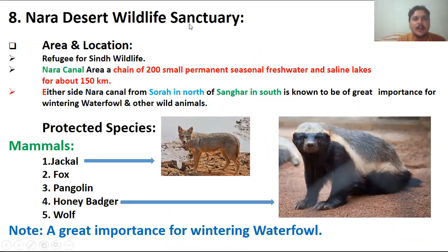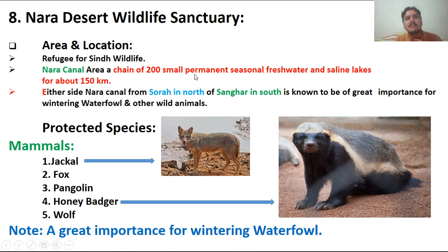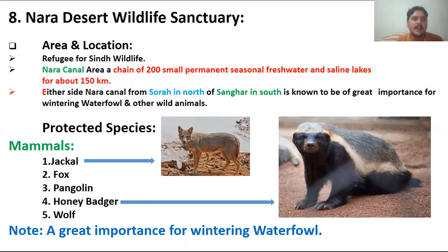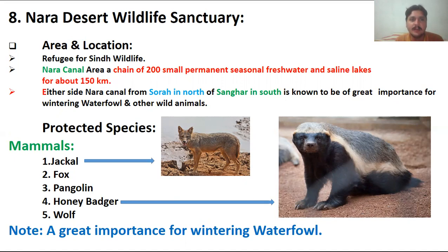Number eight is the Nara Desert Wildlife Sanctuary, located in the Sindh region. It is a very big refuge, serving as a supportive area for many wild animals. The Nara canal has about 200 small permanent and seasonal freshwater and saline lakes, forming a proper chain of water flow over a 150 kilometer area. It extends either side of the Nara canal from Sura in the north to Sangar in the south, and is a very important wildlife sanctuary and wintering area for waterfowl and bird species.